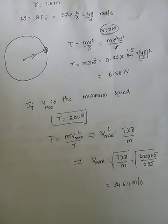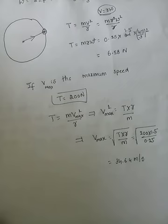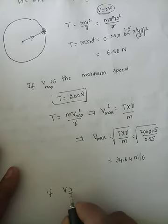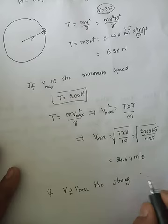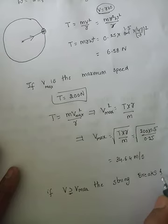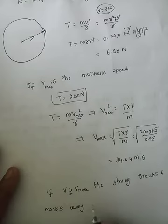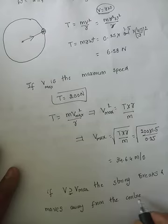If the stone is rotated faster than 34.64 m/s, the string breaks and the stone moves away from the centre because centrifugal force comes into existence, breaks the string, and the stone flies away from the centre. This completes the tension and centrifugal force problem.